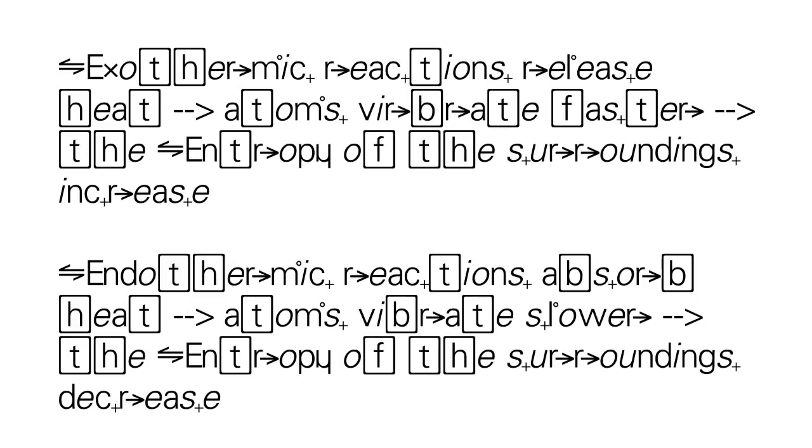We all know that exothermic reactions release heat and endothermic reactions absorb heat. When heat is released in an exothermic reaction, it is given out from the system to the surroundings, in turn increasing the entropy of the surroundings as the surroundings have more energy. The same principle applies in an endothermic reaction in which the entropy of the surroundings would decrease.